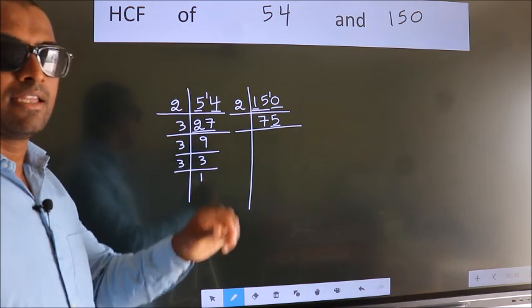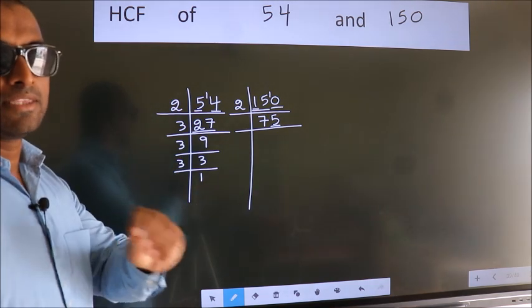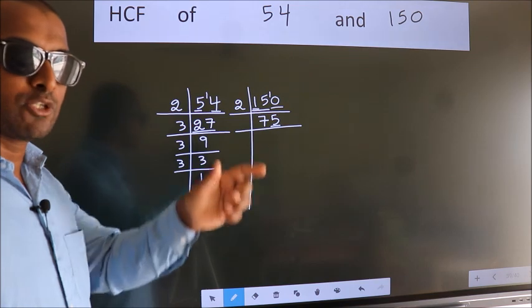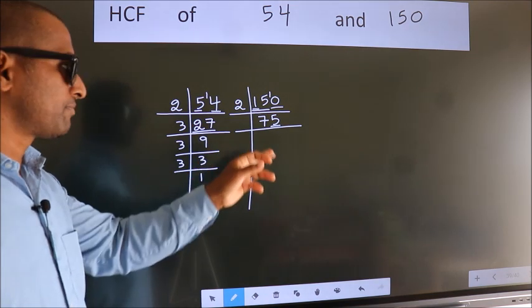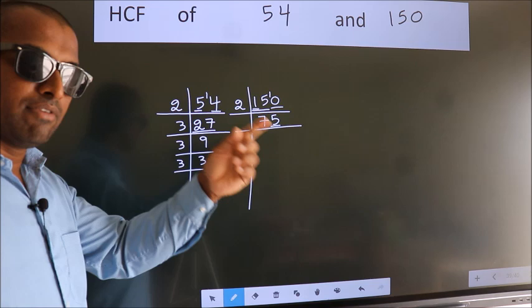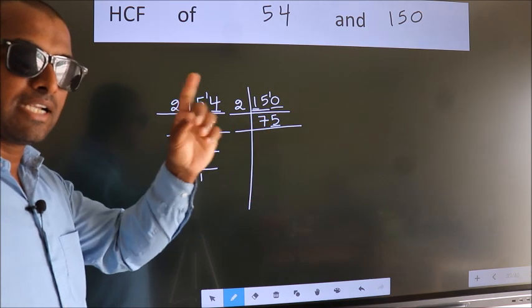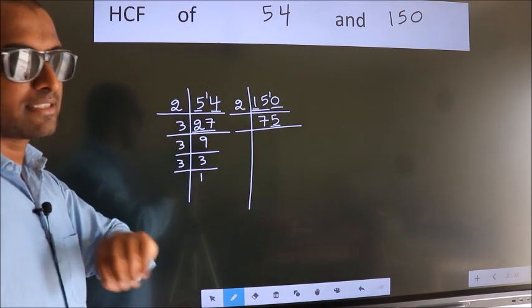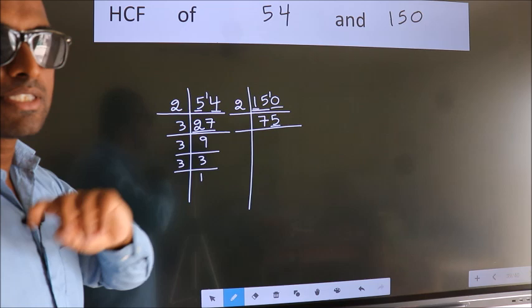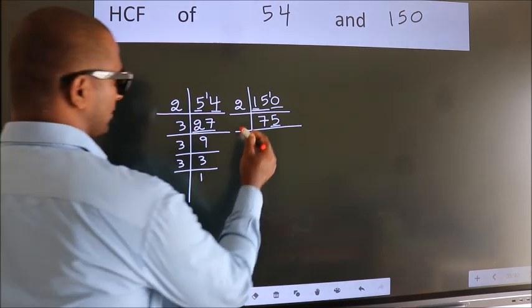Next, prime number 3. To check divisibility by 3, for that we should add the digits. 7 plus 5, we get 12. Is 12 divisible by 3? Yes. So this number also divisible by 3. So take 3.